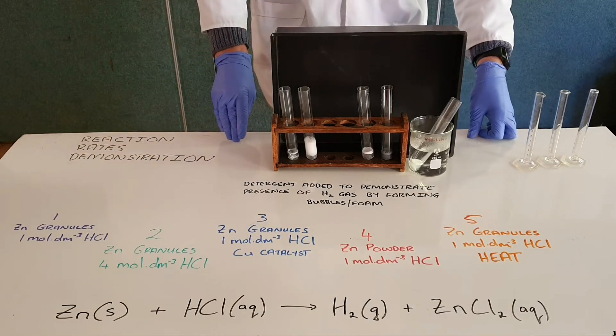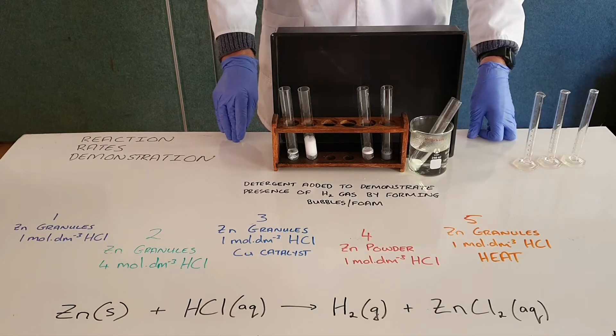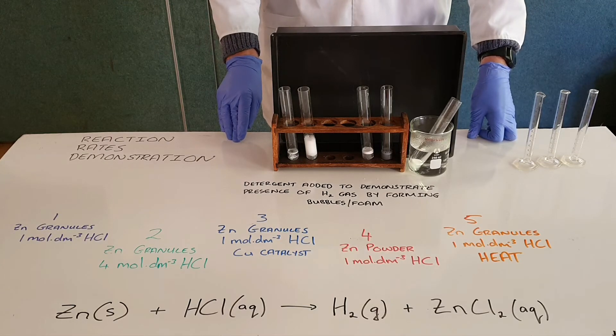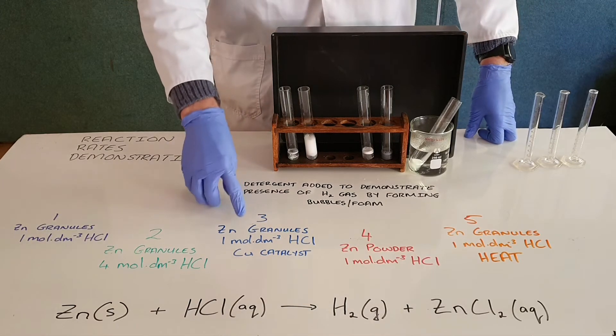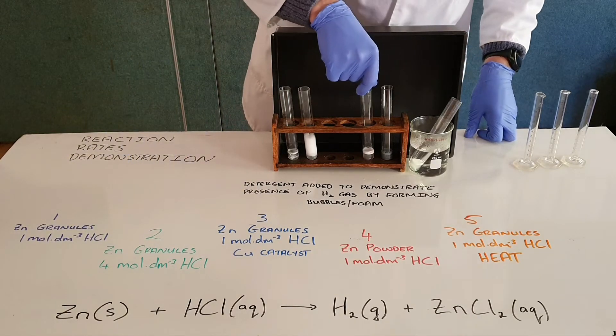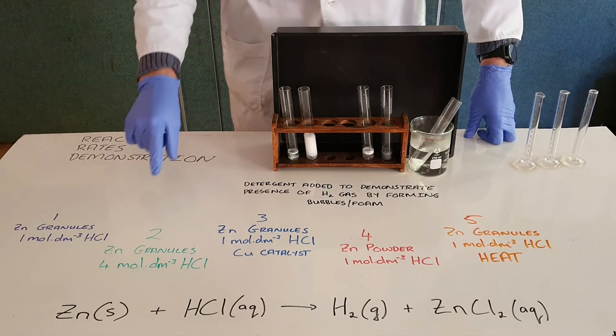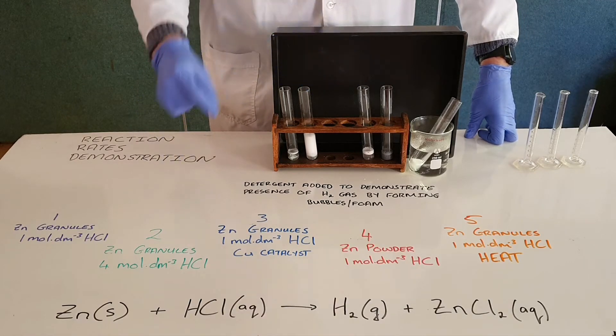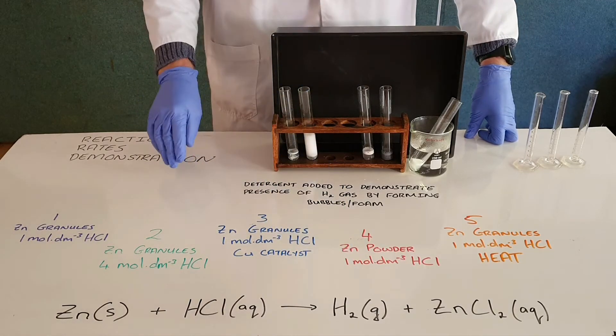We know that a catalyst provides an alternate path for the reaction to proceed by, and so we would expect this reaction to happen faster than our reaction in test tube number one. And we can see that that is indeed the case. We can see that more foam is formed, meaning that more hydrogen gas is being formed in that test tube.